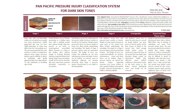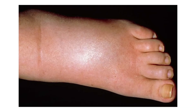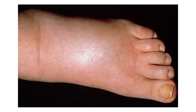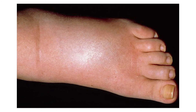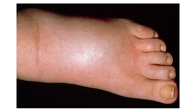It is not always possible to identify erythema on darkly pigmented skin. Instead, pay close attention to temperature and texture changes. The detection of localised heat, oedema and change in tissue consistency are early warning signs of tissue damage.